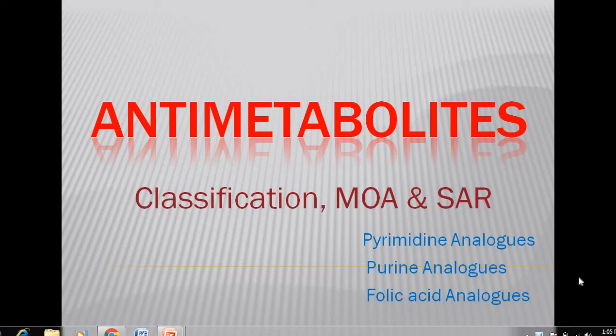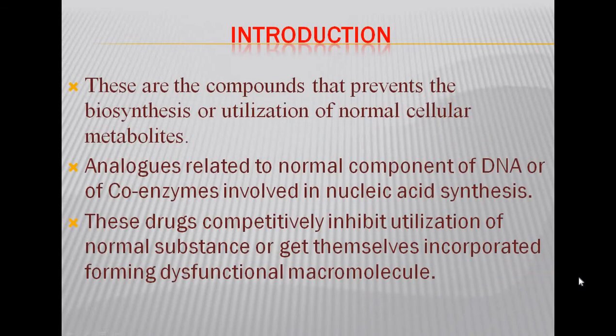Hello everyone. Today's topic for discussion is anti-metabolites. In this lecture we will discuss the classification, mechanism of action, and structure-activity relationship of pyrimidine analogues, purine analogues, and folic acid analogues. Anti-metabolites are compounds that prevent the biosynthesis or the utilization of normal cellular metabolites.